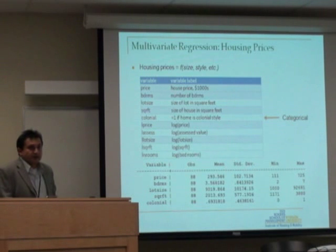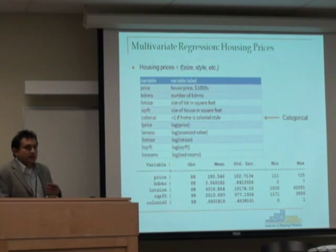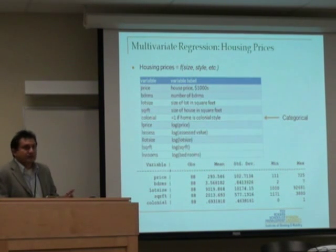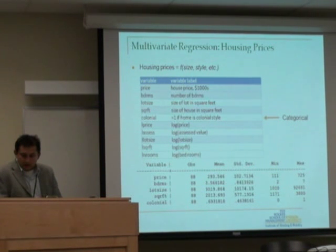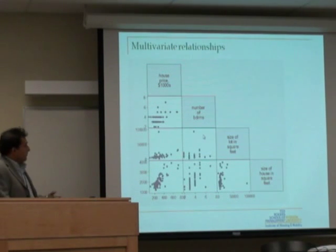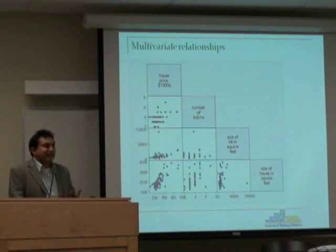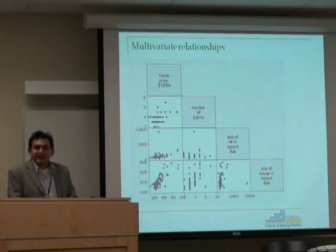There could be many other variables — the exterior, the furnace, presence of a swimming pool, number of fireplaces, proximity to subway or metro, proximity to freeways or highways, and so on. But we're just building a simple model. If I were to plot the relationship between various variables, one good technique common in all software is the scatter plot matrix.